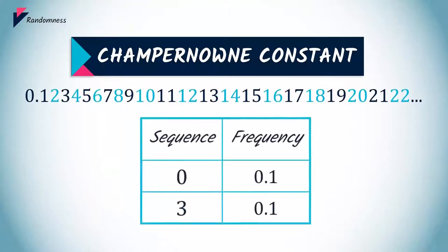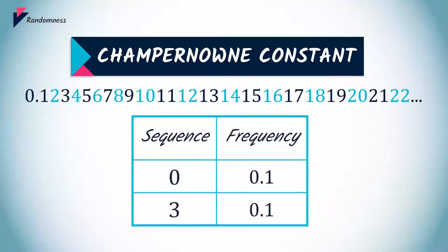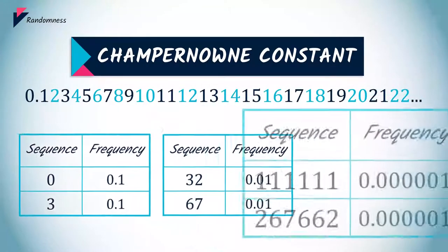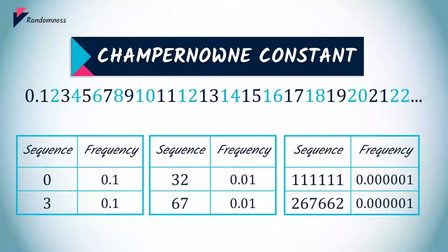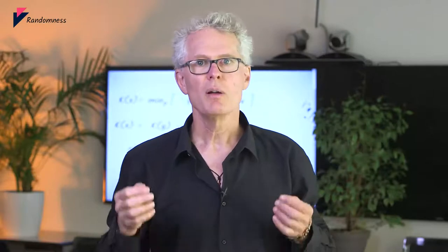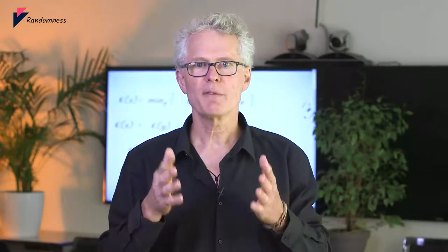There are 10% zeros and 10% threes. There is a 1% occurrence of 32 and a 1% occurrence of 67. The number 267,662 occurs as often as 111,111, with a frequency of one millionth. And yet no one would consider the series random. So, measuring frequencies to define randomness was a bad idea after all.